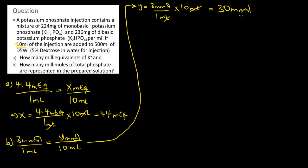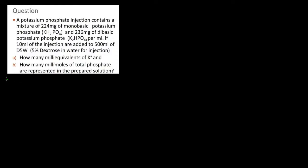Assuming you did not have that information, you could still solve it from first principles, though that would be a little more involved. Alternatively, we can use the masses that have been given in the question. To do that, you need to know a few things. Let's start with part A, beginning with the monobasic potassium phosphate.